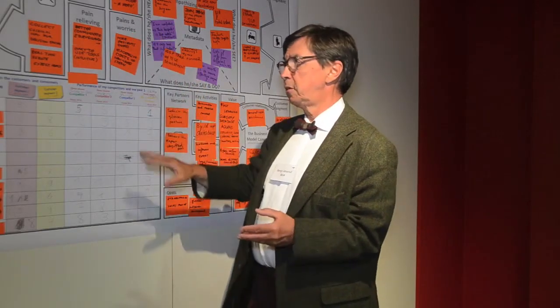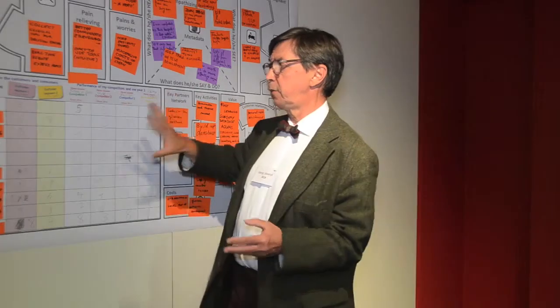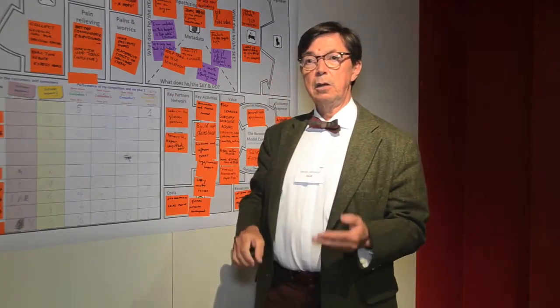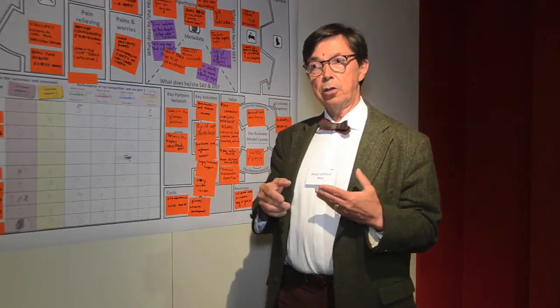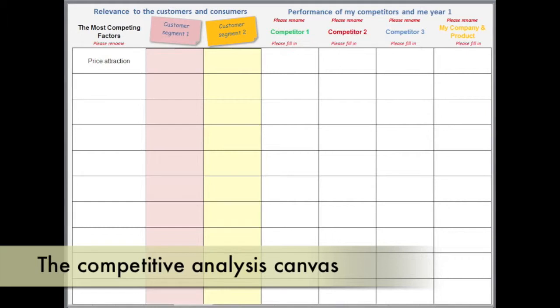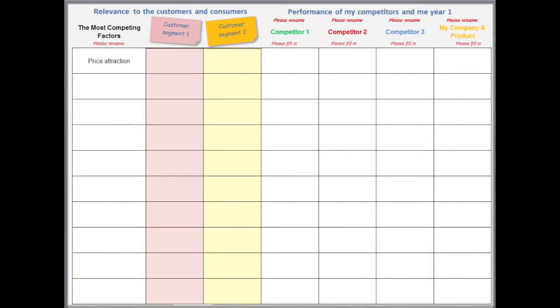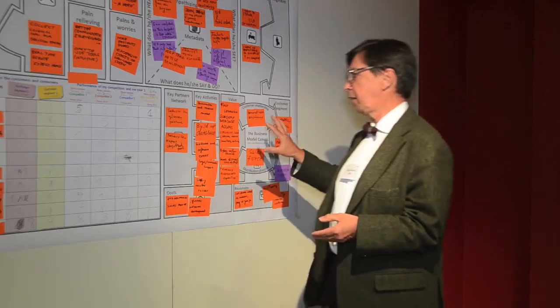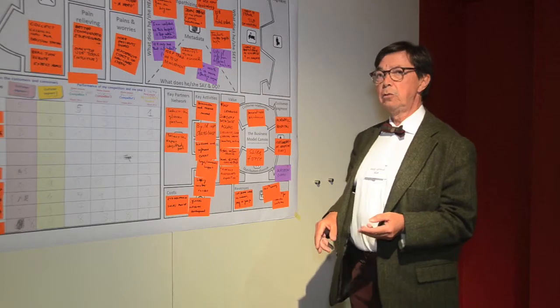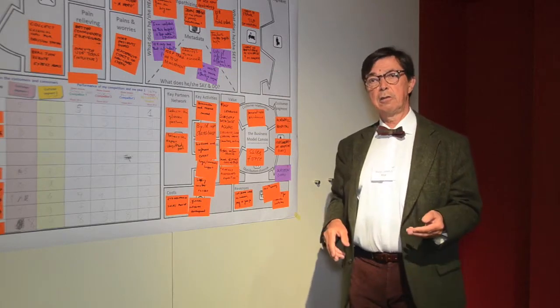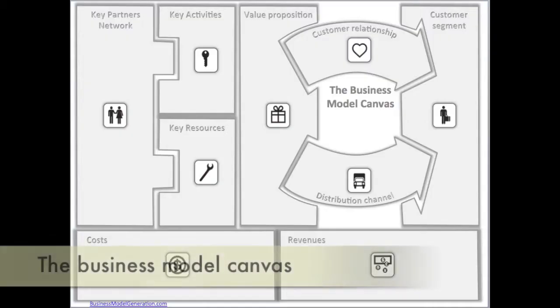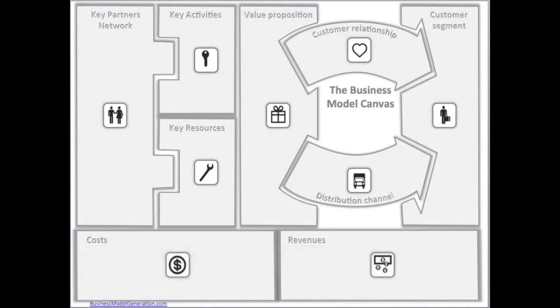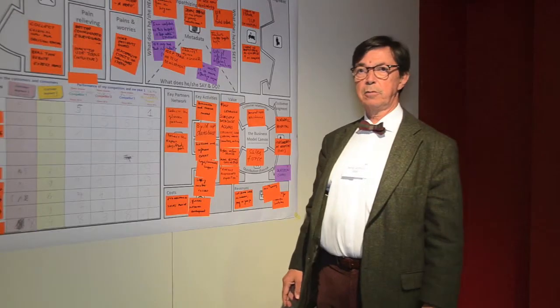That is the first part. Then we have a part that deals with competition and how the customer perceives us versus the competition. And finally we have this third part, which is the actual business model canvas — which is becoming widely used.